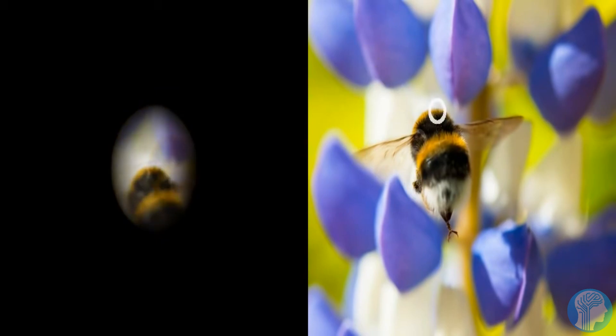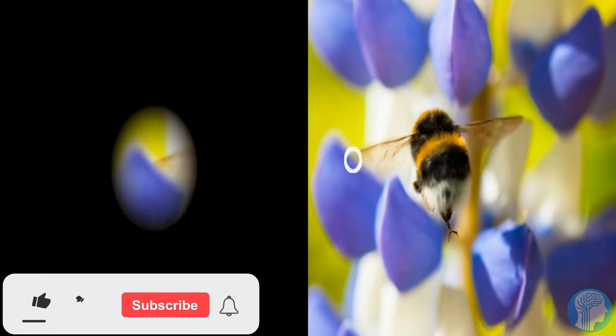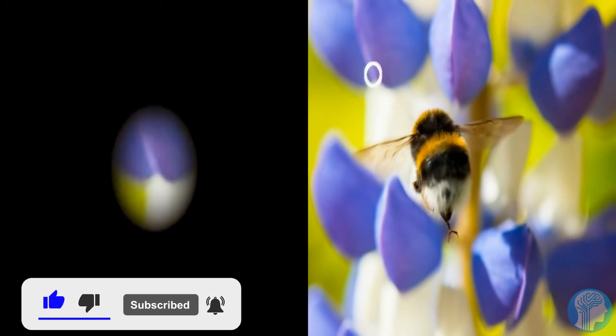This is also demonstrated in the video below. The white circle on the right depicts prospective eye movements, while the fuzzy blob on the left depicts the constantly changing visual input. Seeing, on the other hand, is never a chore for us. We see a constantly steady environment rather than the variations and visual noise that a video would record.